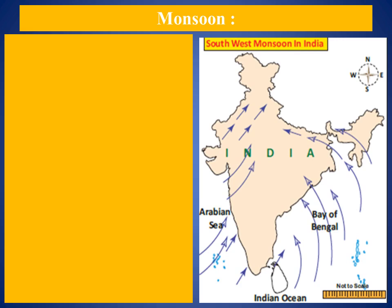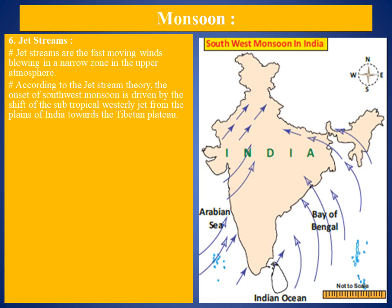Today's sixth factor affecting the climate is jet streams. Jet streams are fast-moving winds blowing in a narrow zone in the upper atmosphere. According to the jet stream theory, the onset of the southwest monsoon is driven by the shift of the subtropical western jet over the plains of India towards the Tibetan plateau. The easterly jet stream causes tropical depressions both during the southwest monsoon and returning monsoons.